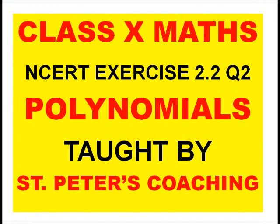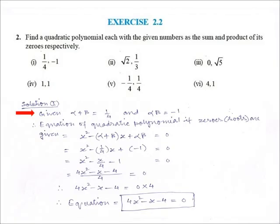In this video, I am covering solutions of NCERT Exercise 2.2, question 2nd, from class 10 maths, chapter Polynomials. In this question, we have to find a quadratic polynomial each with the given numbers as the sum and product of its zeros respectively.